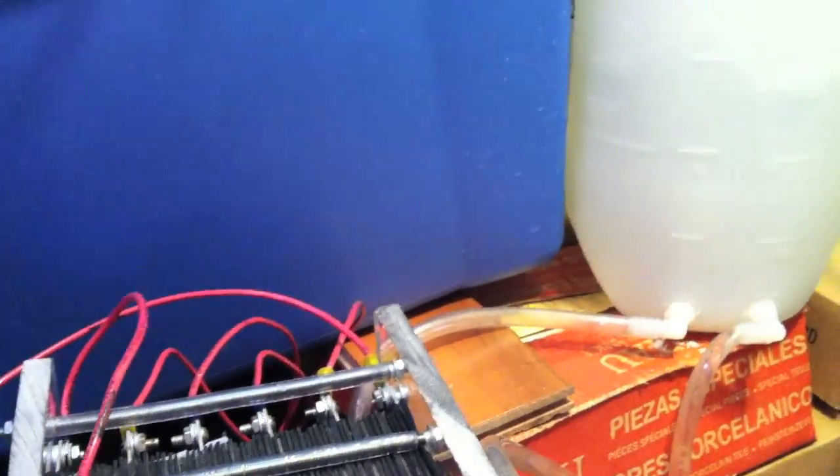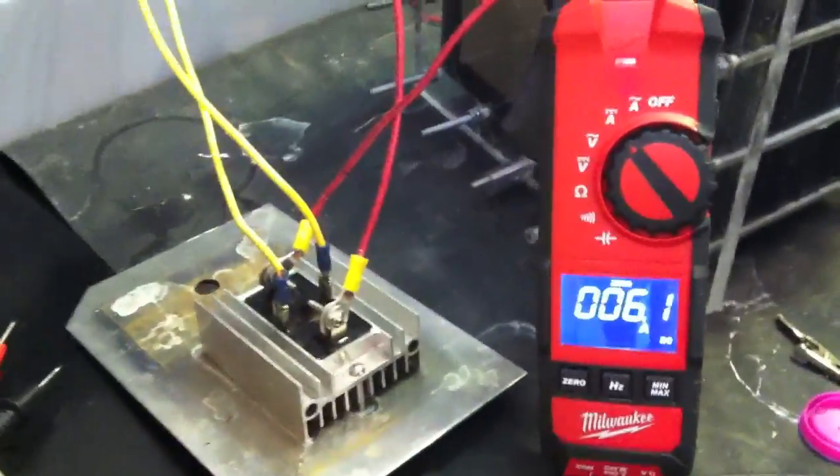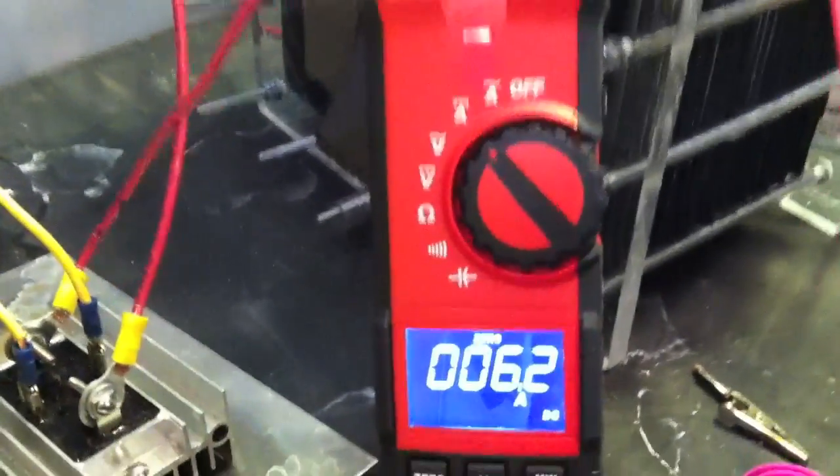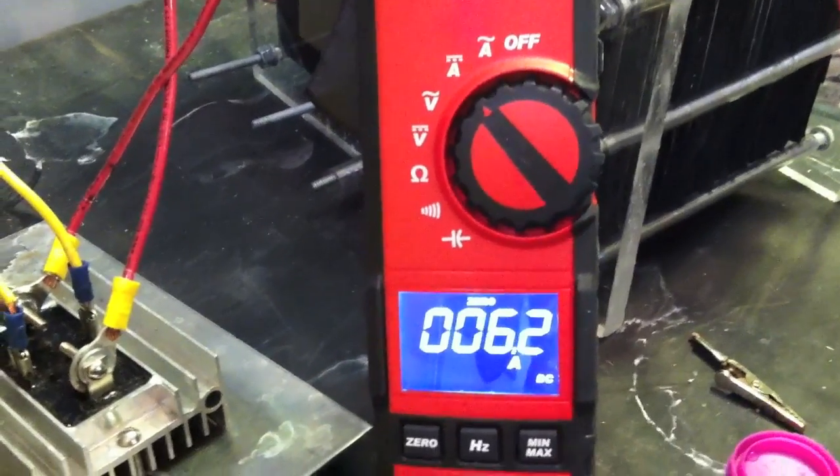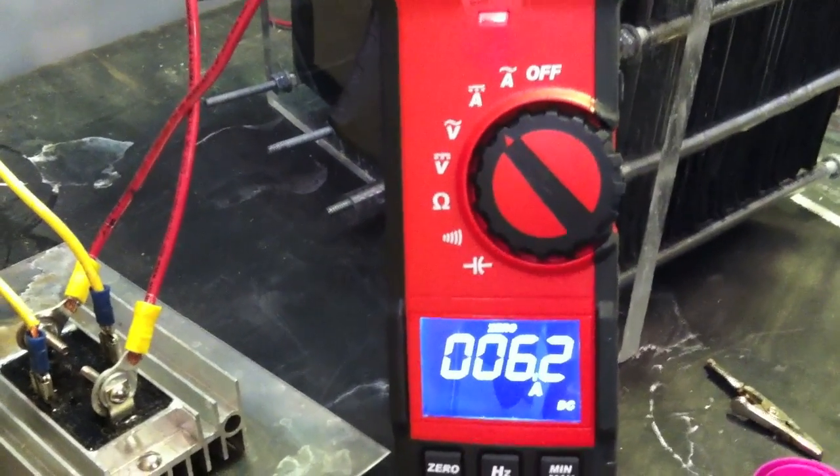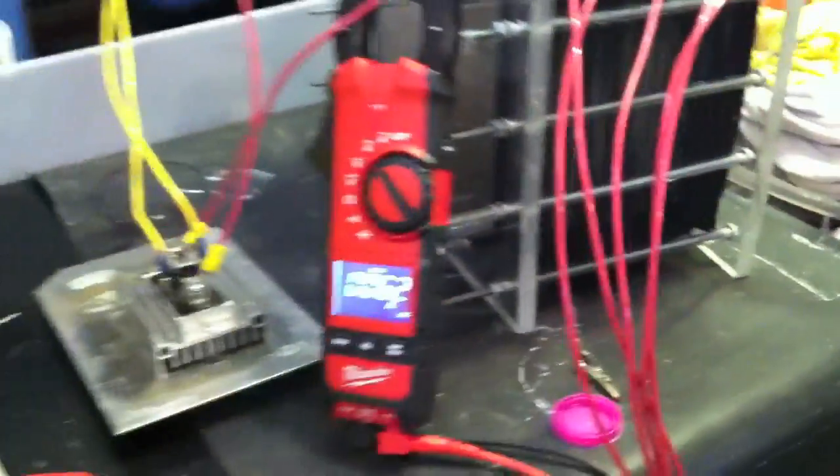So that is how it is wired right now. And I am measuring the current after the bridge rectifier so straight DC current or amperage into the cell right now and it is hitting about 6.1, 6.2 amps. Now I will go ahead and show the voltage.